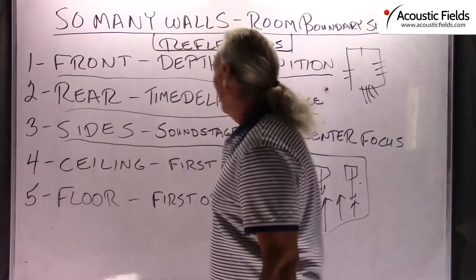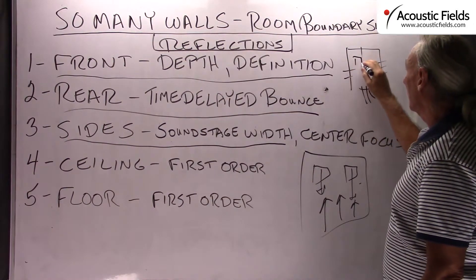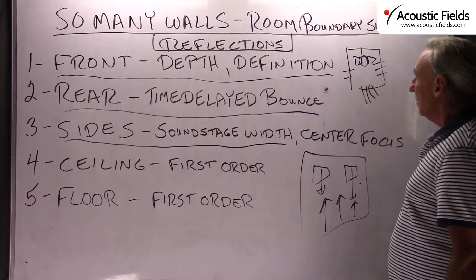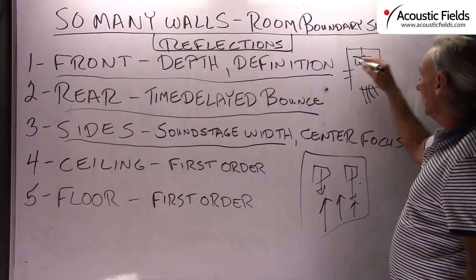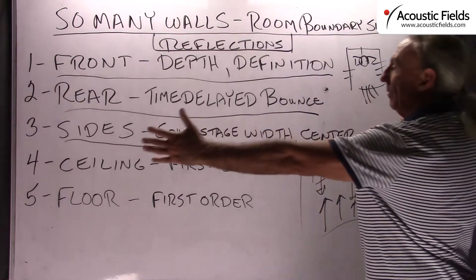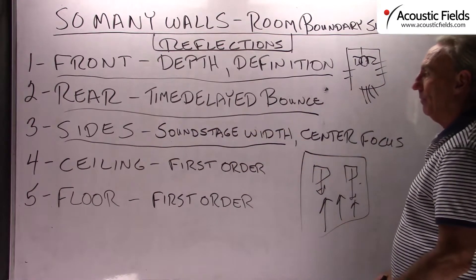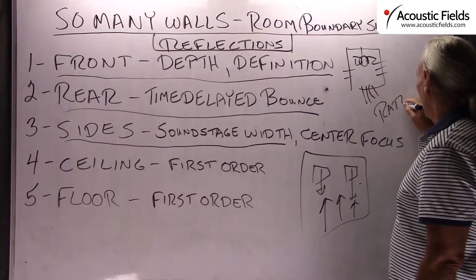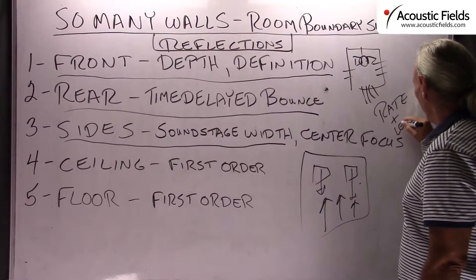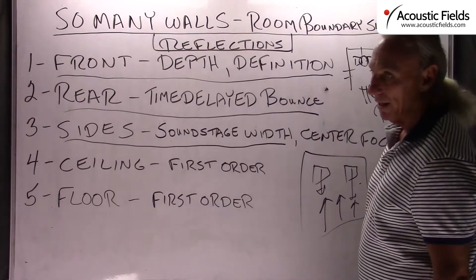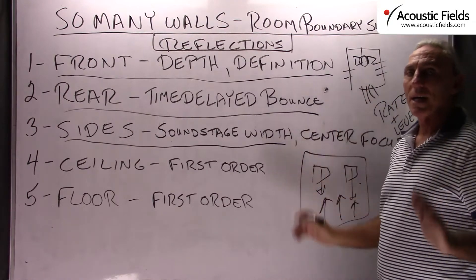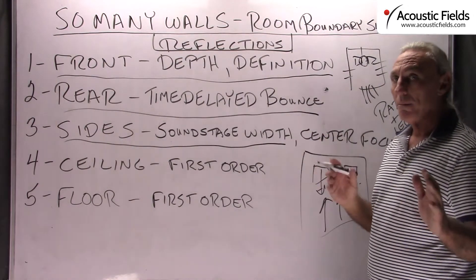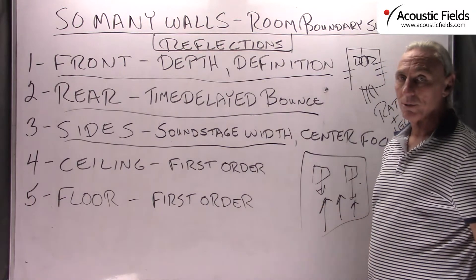The sides are directly related to our soundstage width — the space between our speakers — and then acoustically, psychoacoustically, our speakers disappear and we get a wider soundstage. So the sides are very important, and the rate and level of absorption on the sidewalls are very critical. You can't just throw up any sound absorbing material on those sidewalls or the rear wall; you have to manage how much and at what frequency you're absorbing.